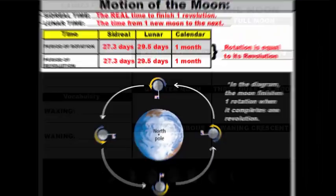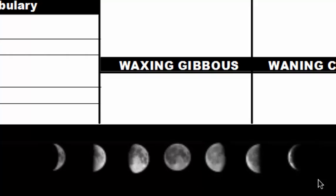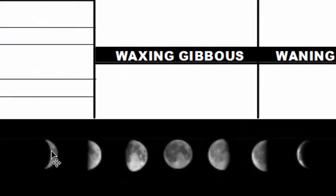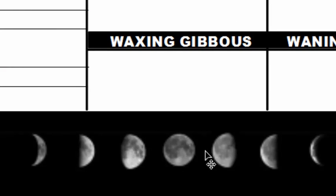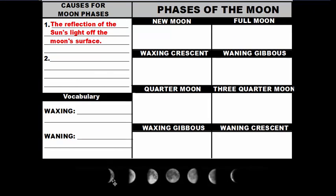Now let's talk about the different phases of the moon — the different shapes or appearances the moon takes throughout the month. These are the different appearances the moon will have as the month progresses with each passing day. Moon phases are caused by two things: first, the reflection of the sun's light off the moon's surface — the moon doesn't generate its own light, so what you see is sunlight being reflected, increasing as the month goes on, then starting to decrease as the month progresses toward the end.